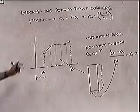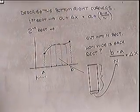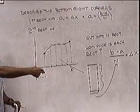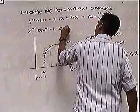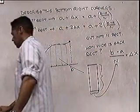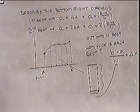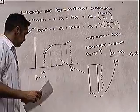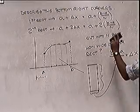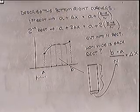For the second rectangle, you go out A again but add two delta x's - that gets you to the bottom right corner of the second one. So the second rectangle's right endpoint is A plus 2 delta x, which is A plus 2 times b minus a over n. The third bottom right corner would be A plus 3 times b minus a over n.